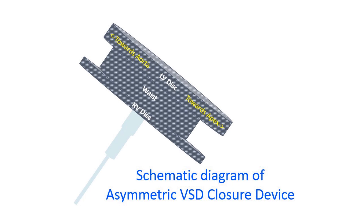A study published in 2021 used asymmetric VSD closure devices in 16 cases of perimembranous VSD without aortic margin. Three such devices were implanted in those with thick aortic margin as well. Three patients with associated membranous septal aneurysm were also closed with the asymmetric VSD closure device. There were no late aortic regurgitation or heart block in that study on follow-up exceeding 7 years.